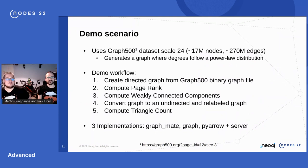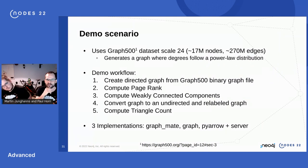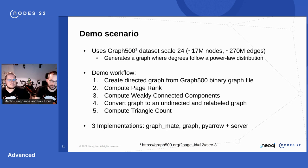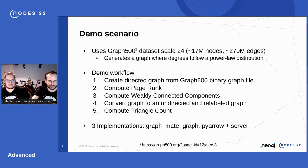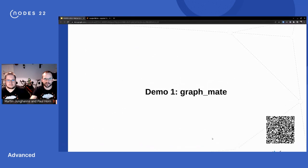For the demos, we use the Graph500 dataset at Scale 24 — 270 million relationships, a power-law graph. We'll create a directed graph from the Graph500 file, compute PageRank and WCC, then convert to an undirected graph and apply a relabeling optimization before running triangle count. We'll show this with all three available APIs: Python, Rust, and the server.